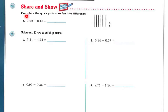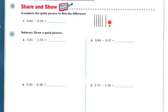Let's look at the share and show. Complete the quick picture to find the difference. We have 62 hundredths minus 18 hundredths. As you can see in the picture, I've drawn the larger number, which is 62 hundredths — I have 6 of the tenths and 2 of the hundredths. I'm subtracting 18 hundredths, but I don't have 8 hundredths to take away.